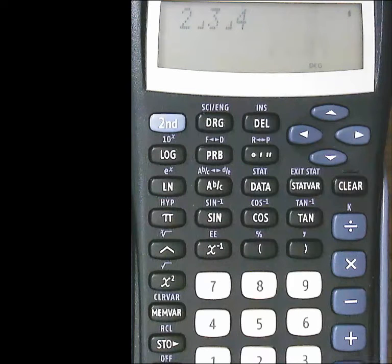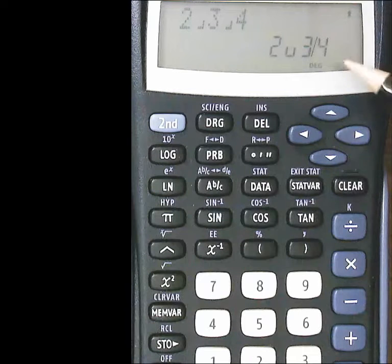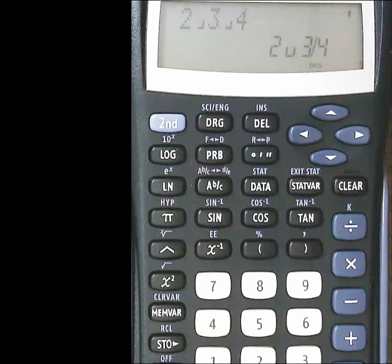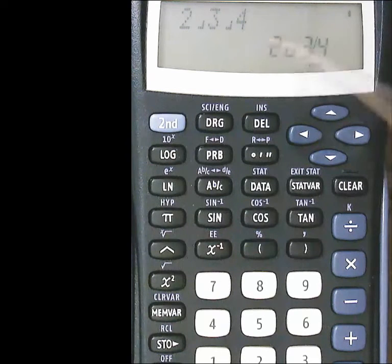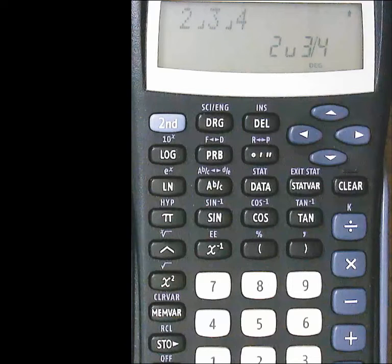And if you push enter, you'll see this is how this type of calculator writes it. Sometimes they have like 2 and then actually a 3 over 4. Sometimes they have 2 and then these little comma symbols in the answer. You can see what that looks like for your calculator.